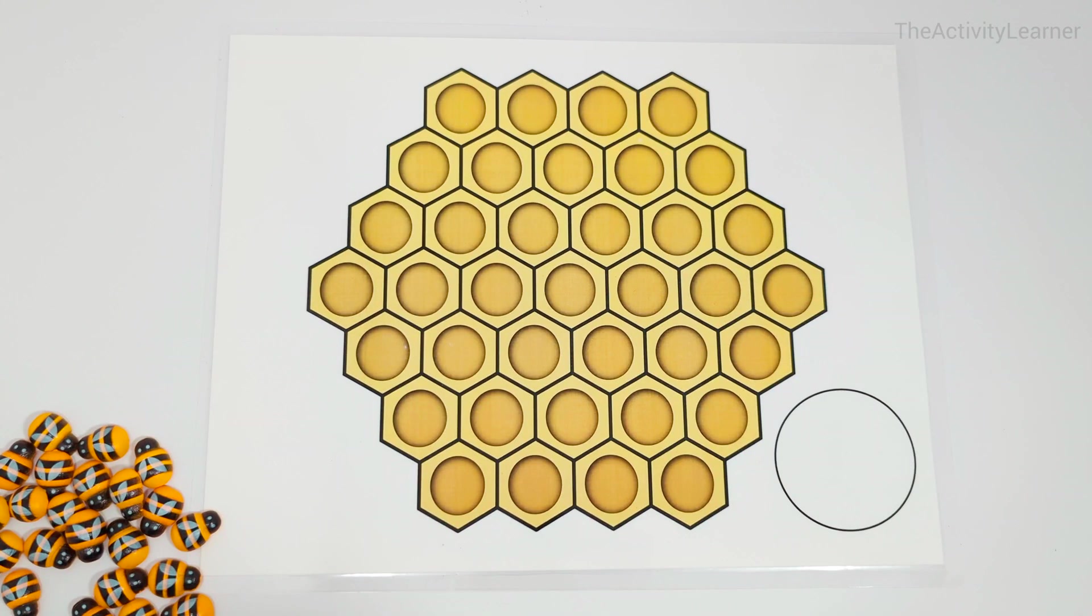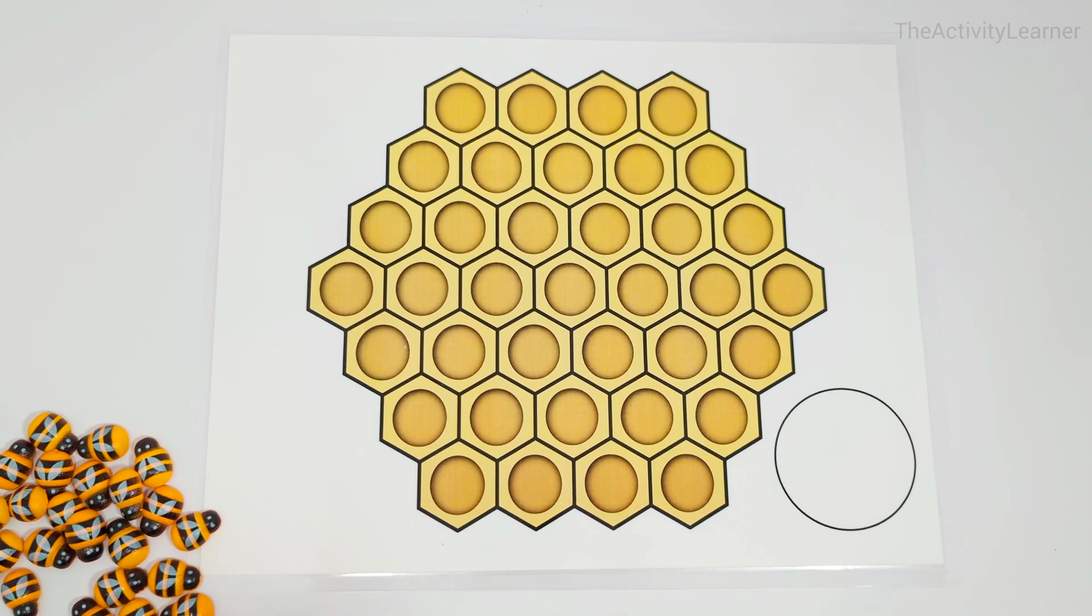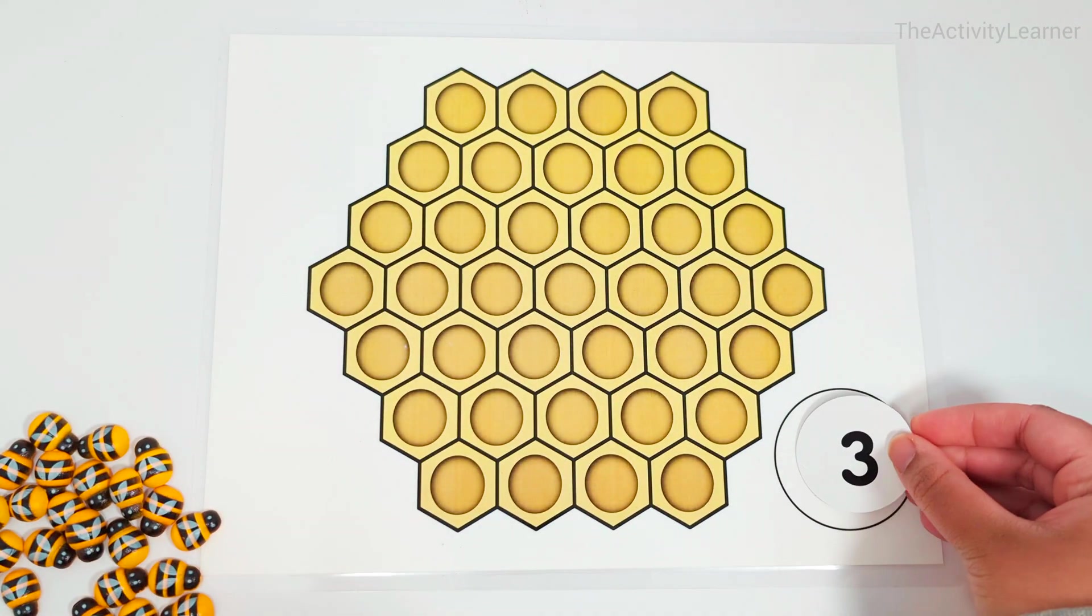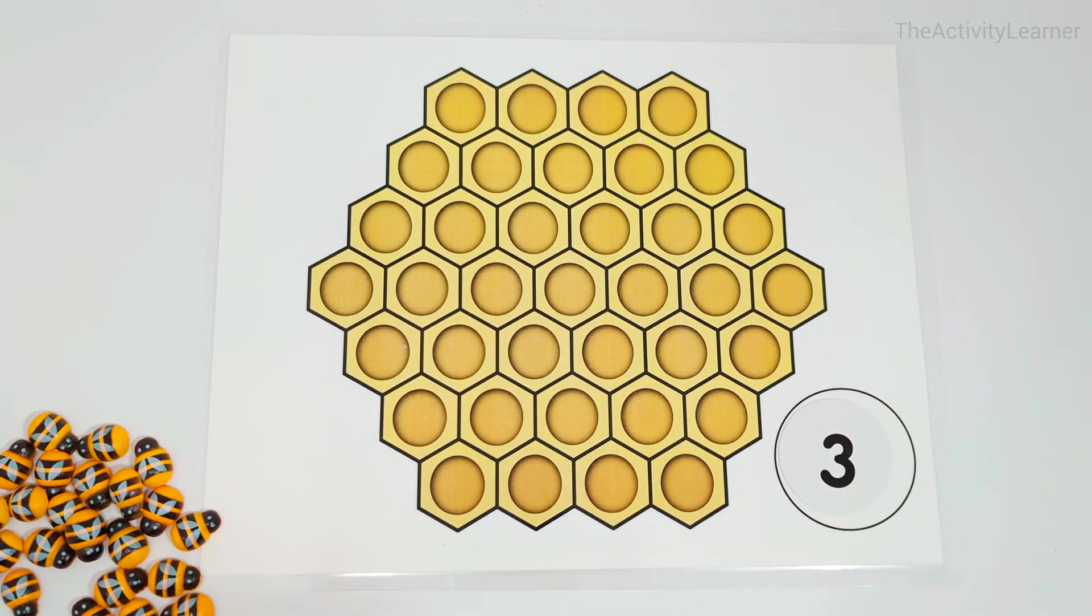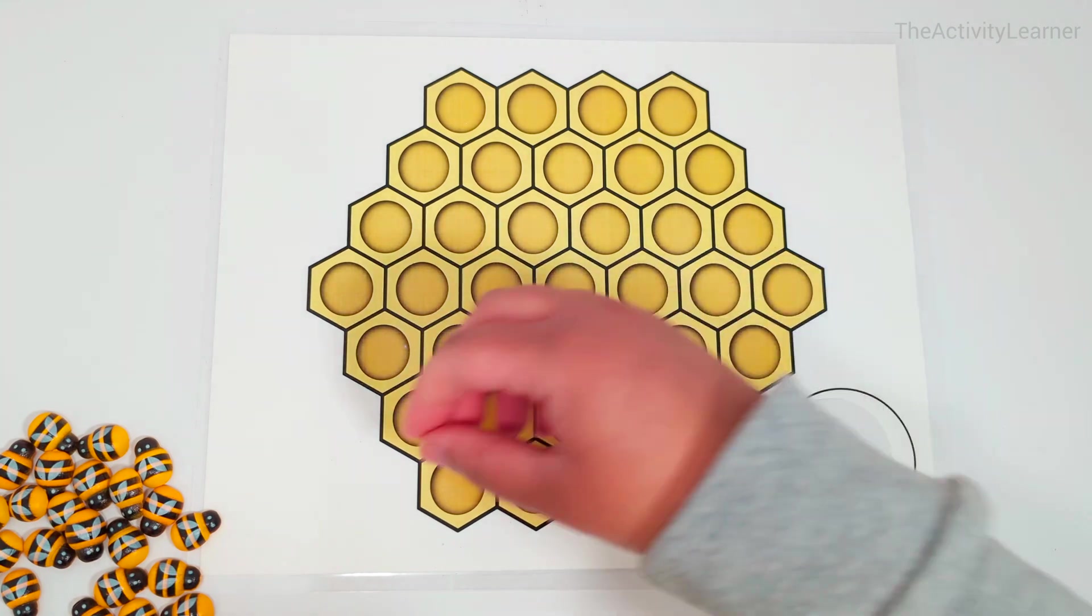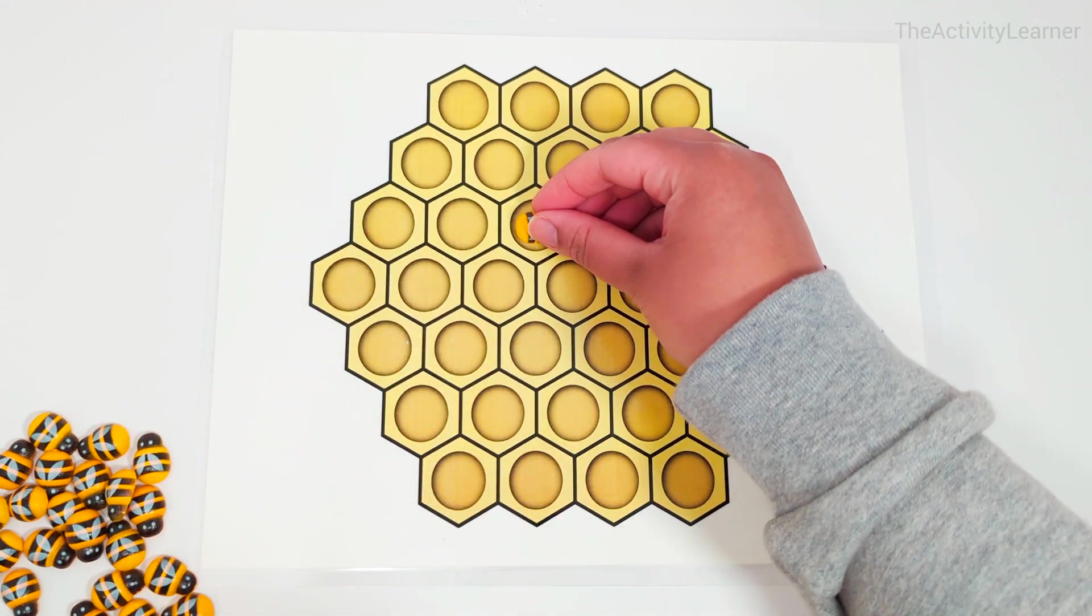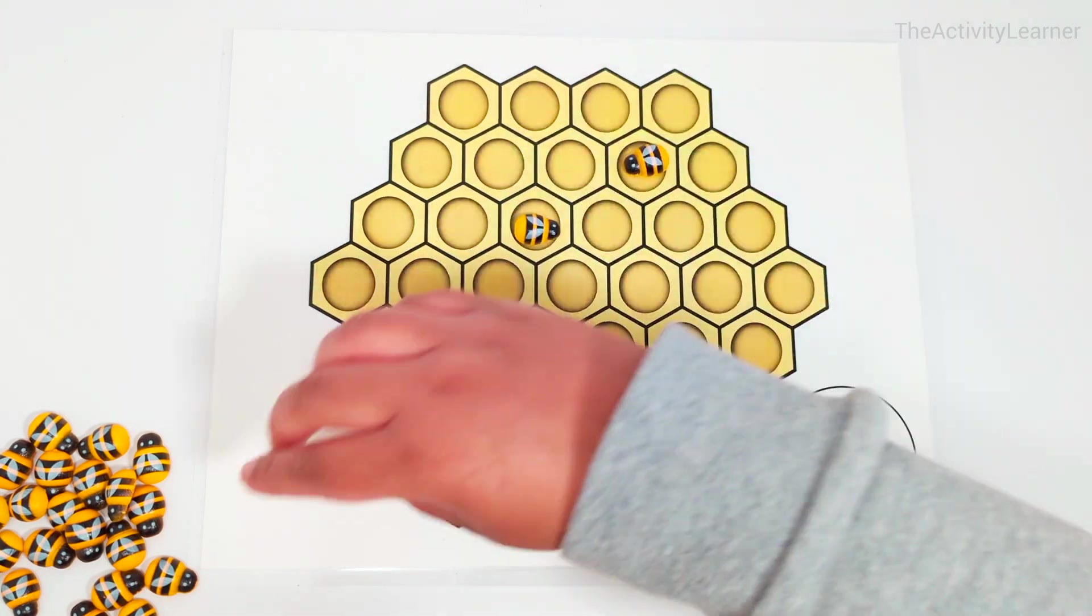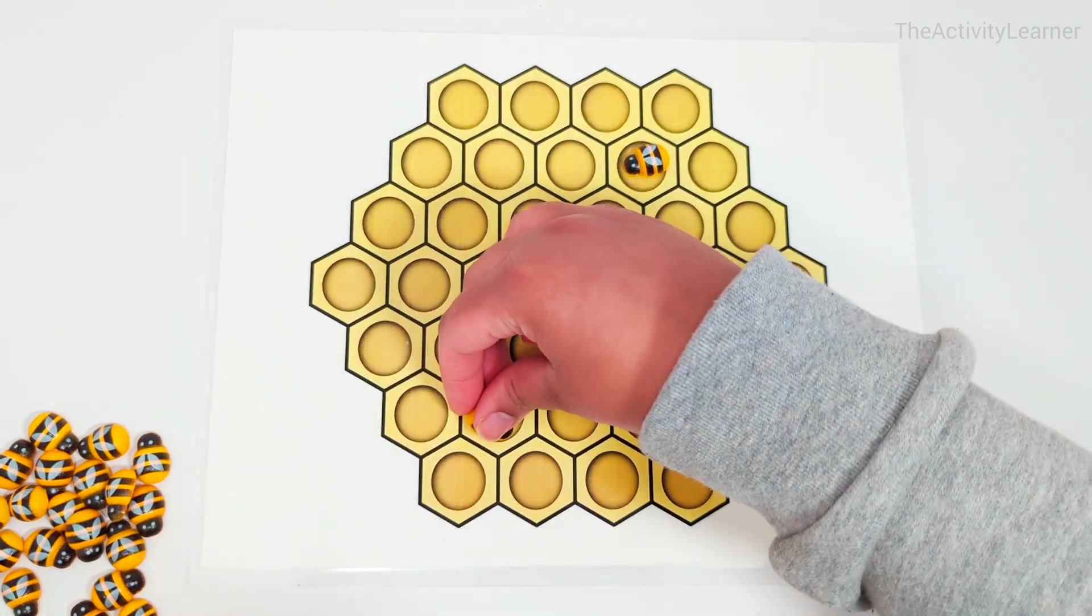Hey activity learners, let's put the right number of bees in the honeycombs. Number three, let's put three bees. One, two, three. Great job.